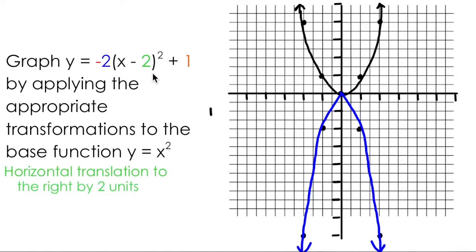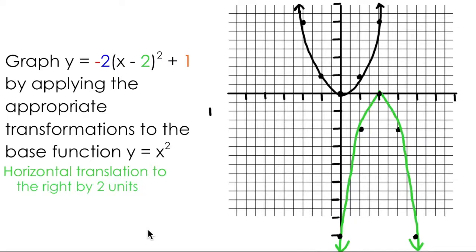Reading from left to right, the next transformation I see is a horizontal translation to the right by 2 units. I can pick each of these points up and move them to the right by 2. This point is currently at 1, negative 2. Moving it to the right by 2 will place it at 3, negative 2. I can take a similar approach to translate the other points to the right by 2 units as well, and I can show the resulting parabola in green.